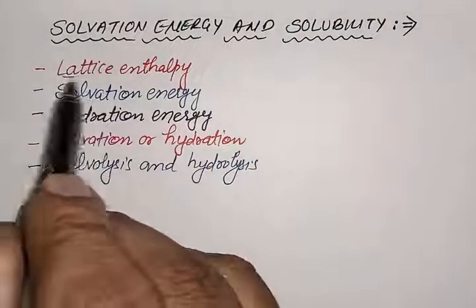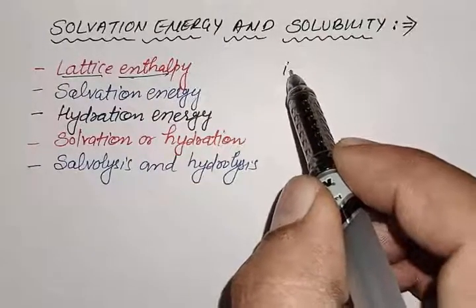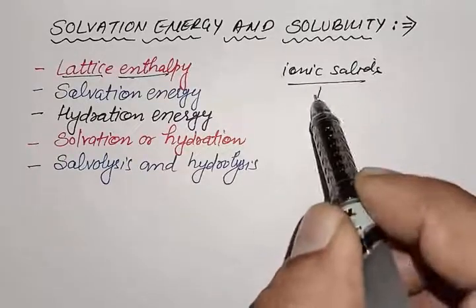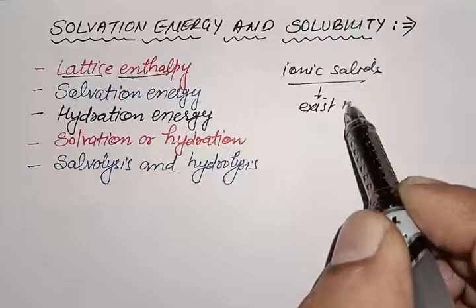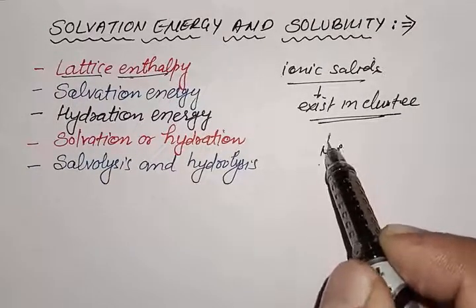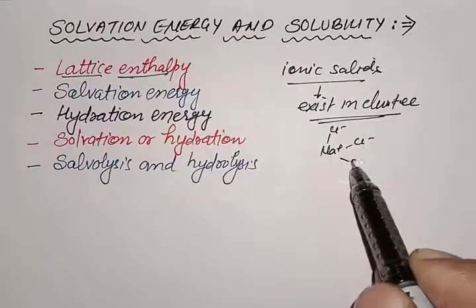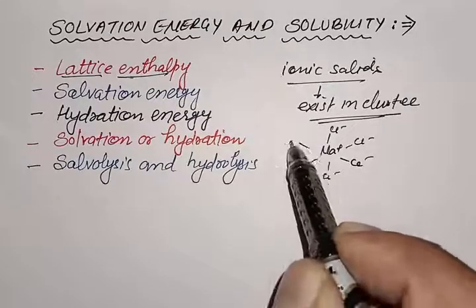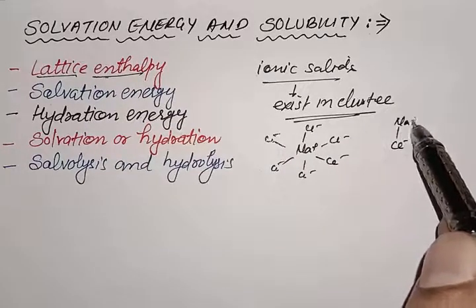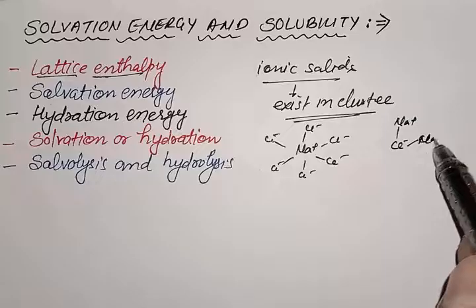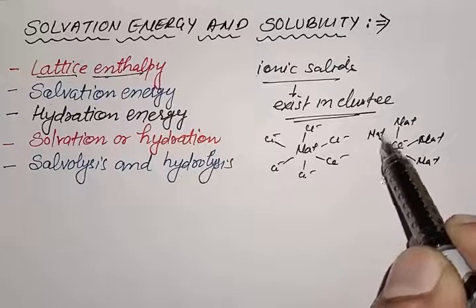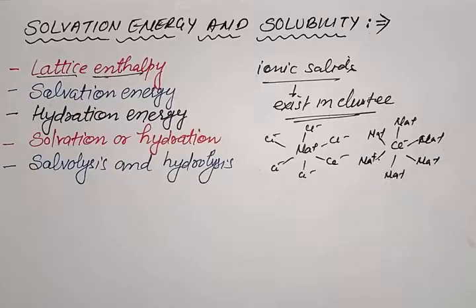The first term is lattice energy. As we know, ionic compounds or ionic solids exist in clusters — a cation is surrounded by many anions, and similarly an anion is surrounded by many cations. Single cation and single anion do not exist independently in an ionic compound; the ionic compound exists as a cluster.